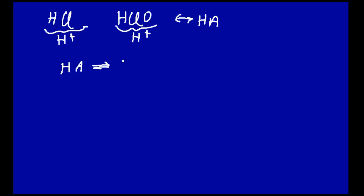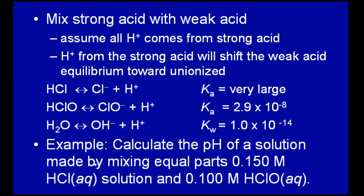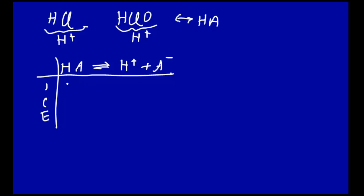HA, the weak acid, is in equilibrium with H⁺ and A⁻, and we use the ICE table with I, C, E. In the problem, we mix equal parts of the strong acid and the weak acid. Equal parts means, for example, we take 100 milliliters of this and 100 milliliters of that, or one liter of each. By mixing equal parts, we've diluted each one of these by a factor of two. So our initial concentration of HA before dilution was 0.10, and when we dilute by half, this goes to 0.05 molar.